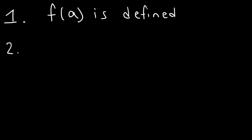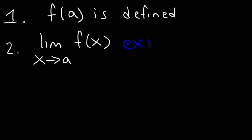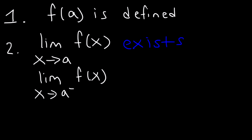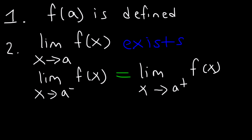The second step is to show that the limit as x approaches a of f of x exists. To show that this limit exists, you need to show that the left-side limit — the limit as x approaches a from the left — is equal to the limit as x approaches a from the right. Only under those conditions will the limit exist. The third step is to show that the limit as x approaches a from either side of f of x is indeed equal to f of a.